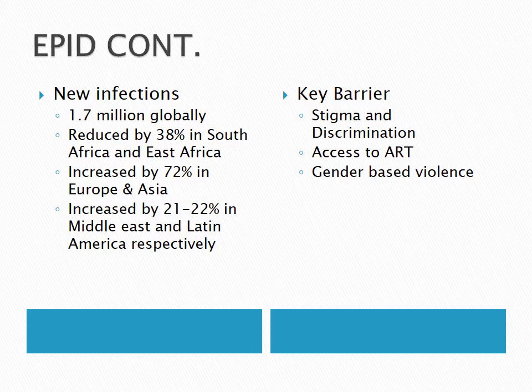There was a 38% reduction in new infection rates in South Africa and East Africa. However, in some other parts of the world — Europe, Asia, the Middle East, and Latin America — there was an increase of 72% and 21-22% respectively in new HIV infections.